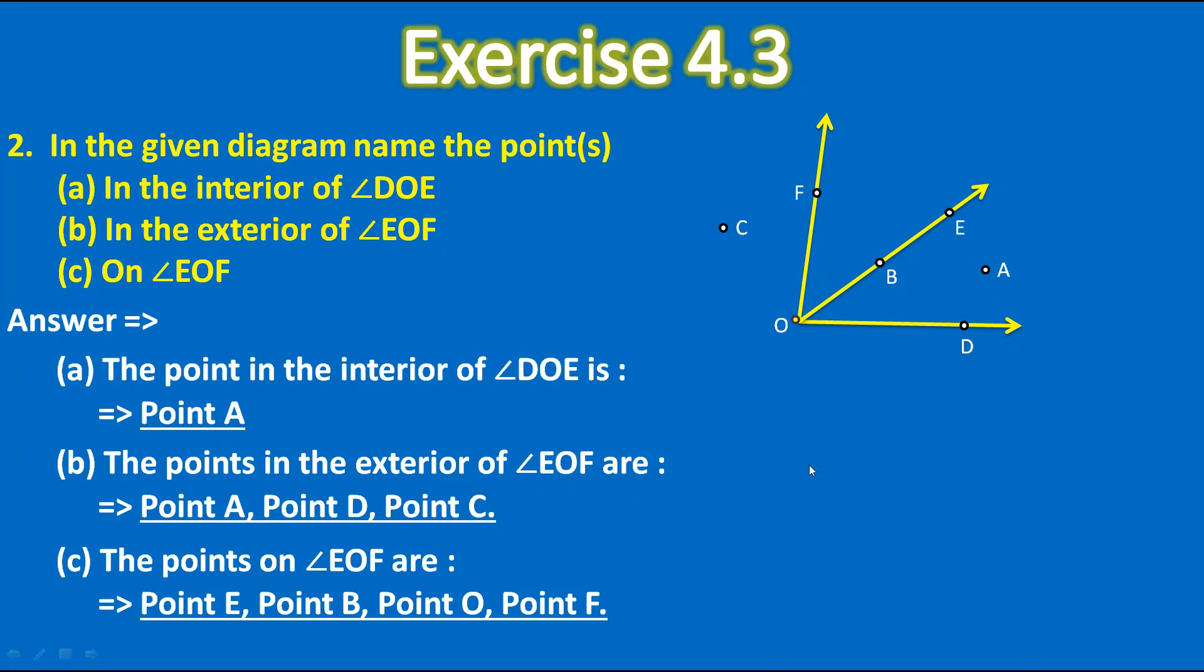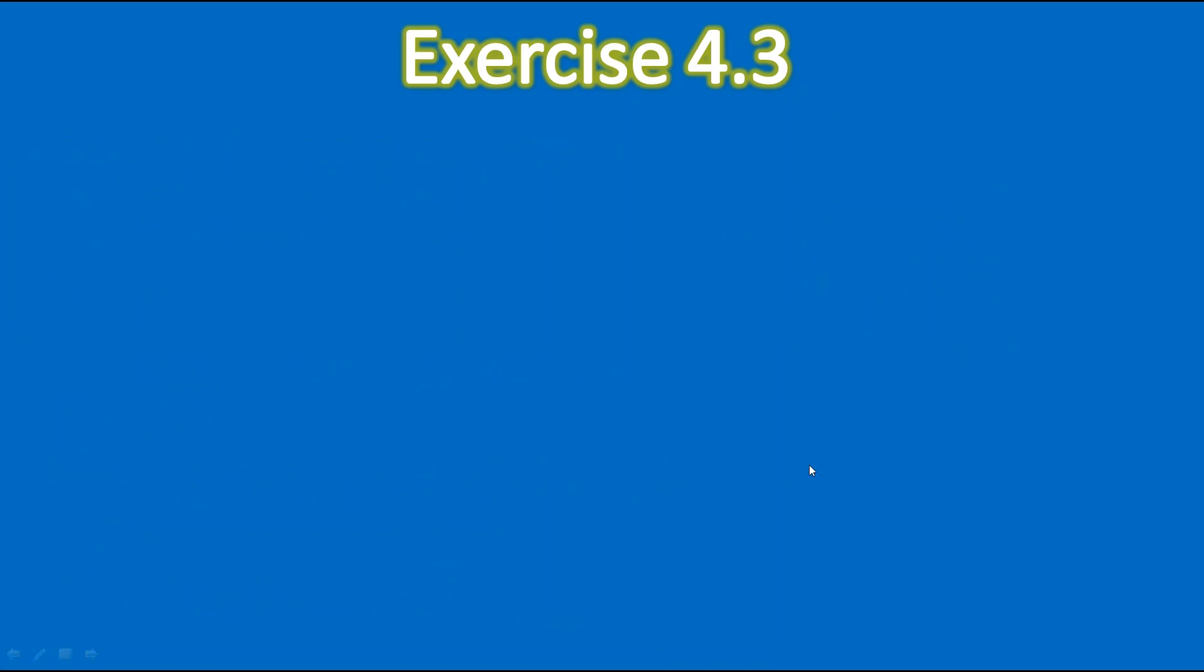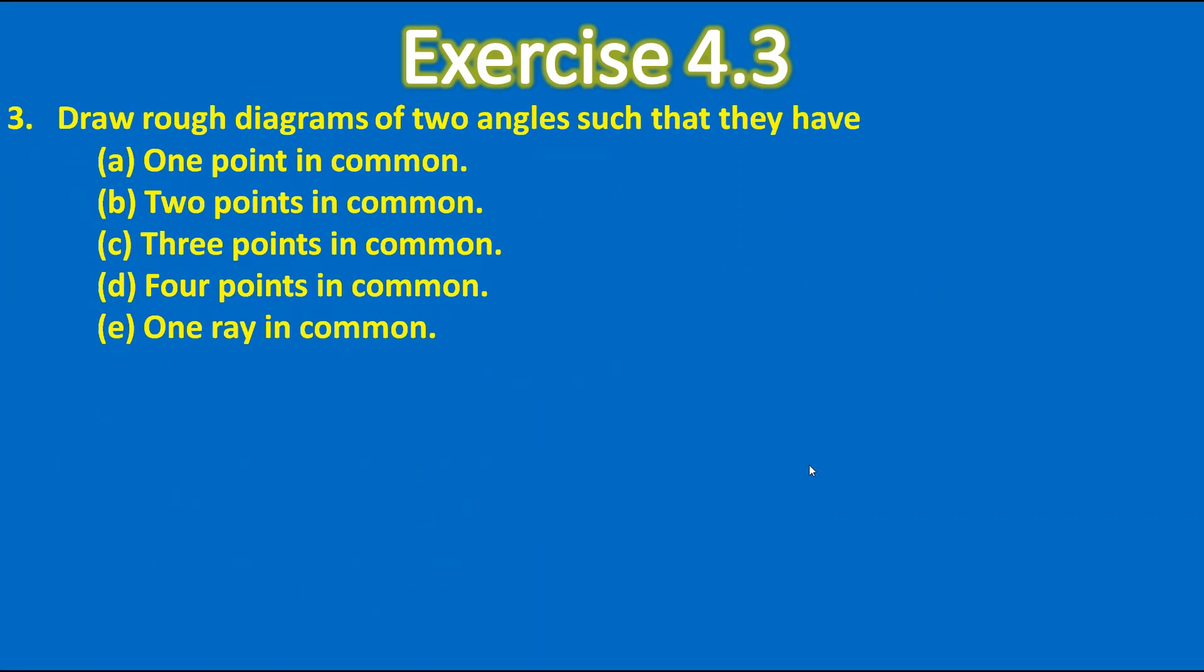Now let's move to the question number 3. Draw rough diagrams of two angles such that they have one point in common, two points, three points, four points and one ray in common. So let's draw separately. So for first one, one point in common.